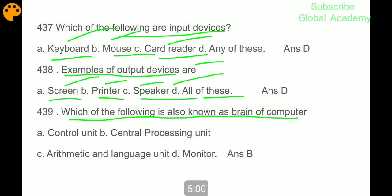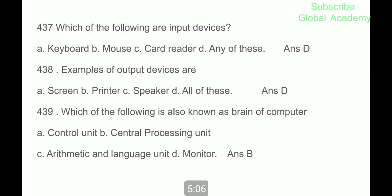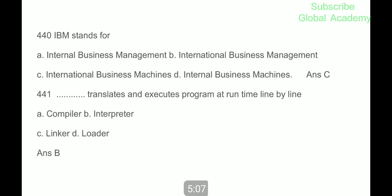Which of the following is also known as the brain of computer? Central Processing Unit. It is also known as the brain of computer. Software - IBM stands for International Business Machine. Interpreter translates and executes program at runtime line by line.